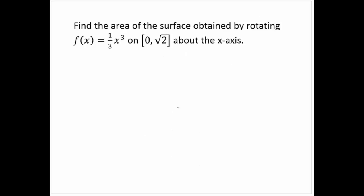Let's consider a fairly simple example. We're asked to find the area of the surface obtained by rotating f(x) = (1/3)x³ on the interval 0 to √2 about the x-axis. To get a rough sketch: at x = 0, f(0) = 0, and at x = √2 we get some point. f(x) = x³ over that interval looks like a curve going up from the origin.